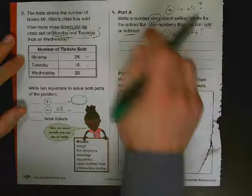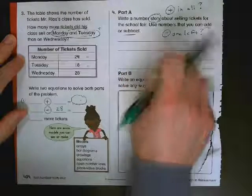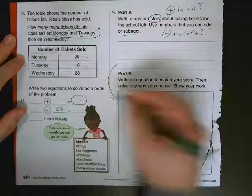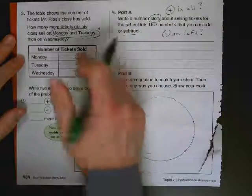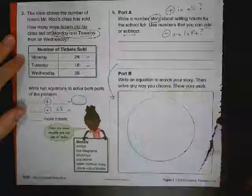Now once you get this equation written as a story, it says down here write an equation to match your story. So just solve it right here, write an equation, solve this. Whatever you decide to do, plus, minus, solve it down here, show your work, and you're done.